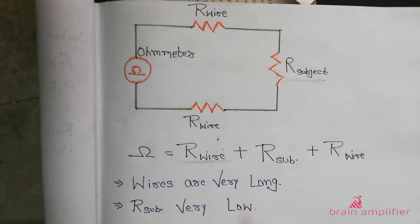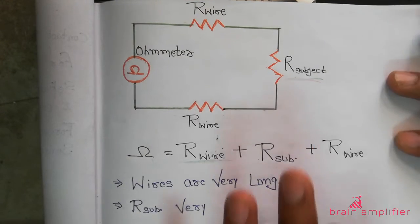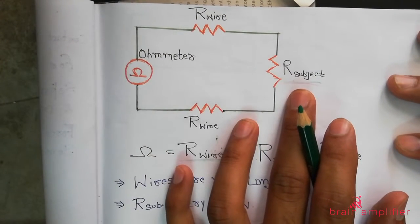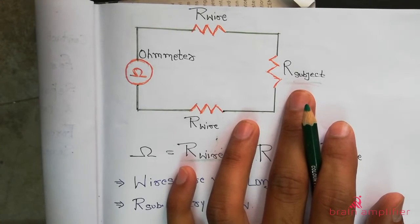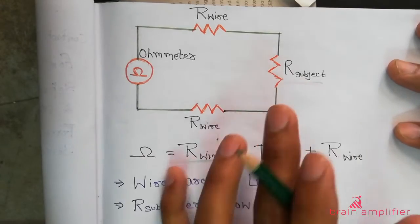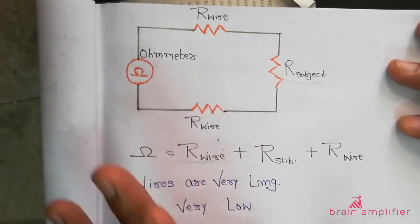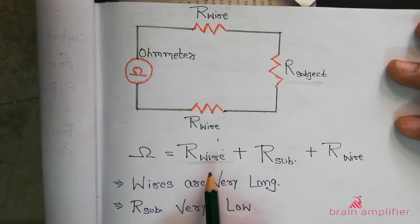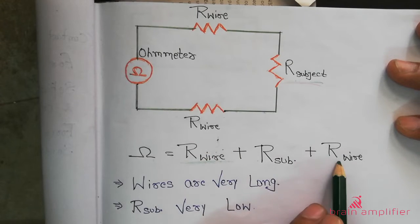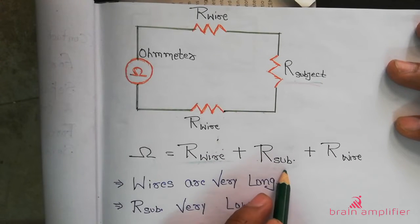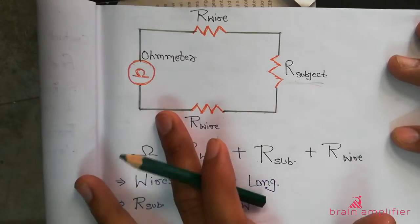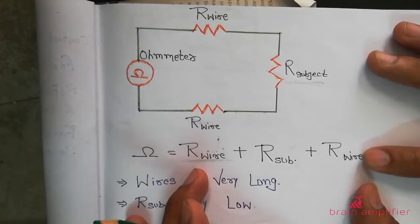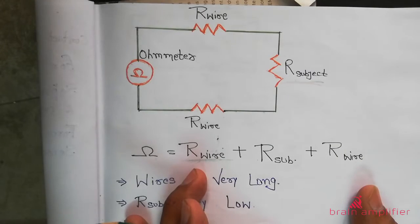There may be another case: suppose R_subject is very small — in the range of micro-ohms or a few ohms. In that case R_wire and R_subject become comparable, and the percentage error introduced by R_wire for the measurement of R_subject becomes significant.